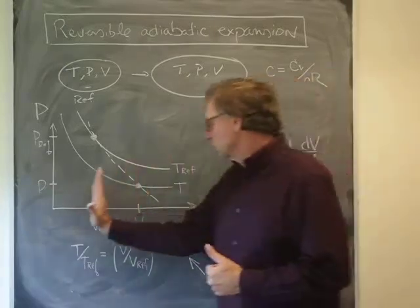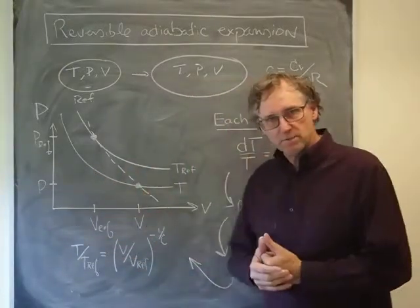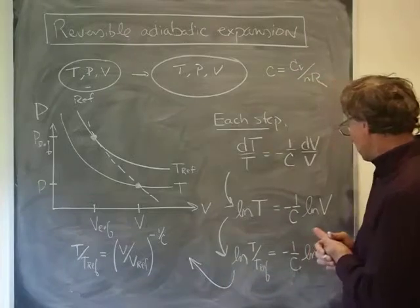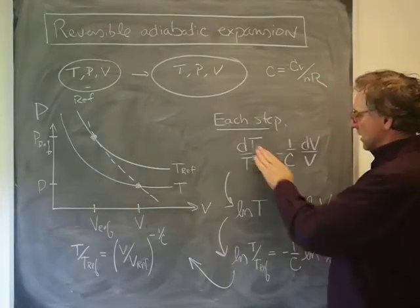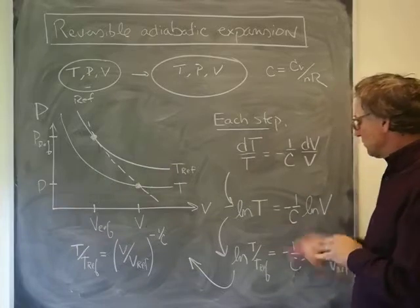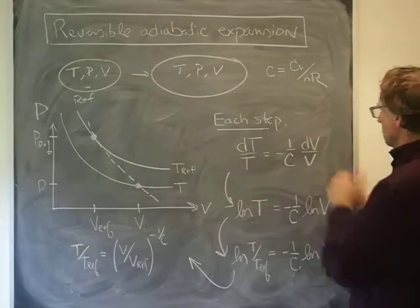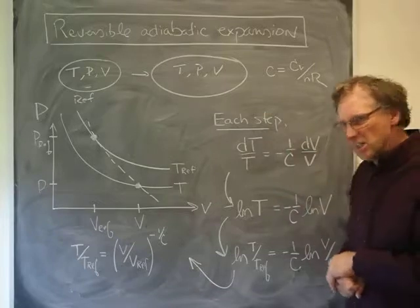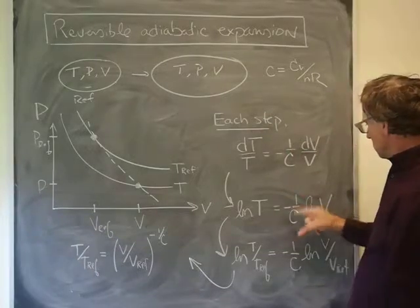That's what I've drawn here. The integral of one over the temperature is just a log temperature. The integral of that—I've assumed this is a constant heat capacity so I've just left it like that—turns into a log V.